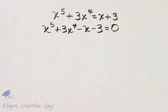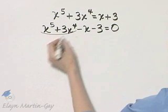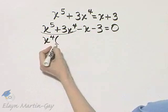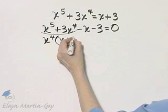Notice I have a four term polynomial, so we will hope that it factors by grouping. If we look at the first two terms, there's a common factor of x to the fourth, and when I factor it out, I have x plus 3.